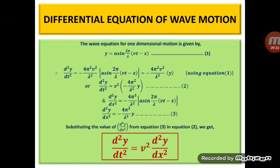To derive the differential equation of wave motion, let us consider a progressive wave advancing in the positive x direction, represented by y equals a sin(2 pi by lambda into (vt minus x)), called equation 1. Differentiating equation 1 twice with respect to time gives equation 2: d²y/dt² equals v² into (minus 4 pi² by lambda²) into y. Differentiating equation 1 twice with respect to x gives equation 3: d²y/dx² equals minus 4 pi² by lambda² into y. Substituting equation 3 into equation 2 yields the differential equation of wave motion: d²y/dt² equals v² into d²y/dx², where v represents the velocity of the progressive wave. This expression will be used while obtaining the expression for a progressive wave in a medium.